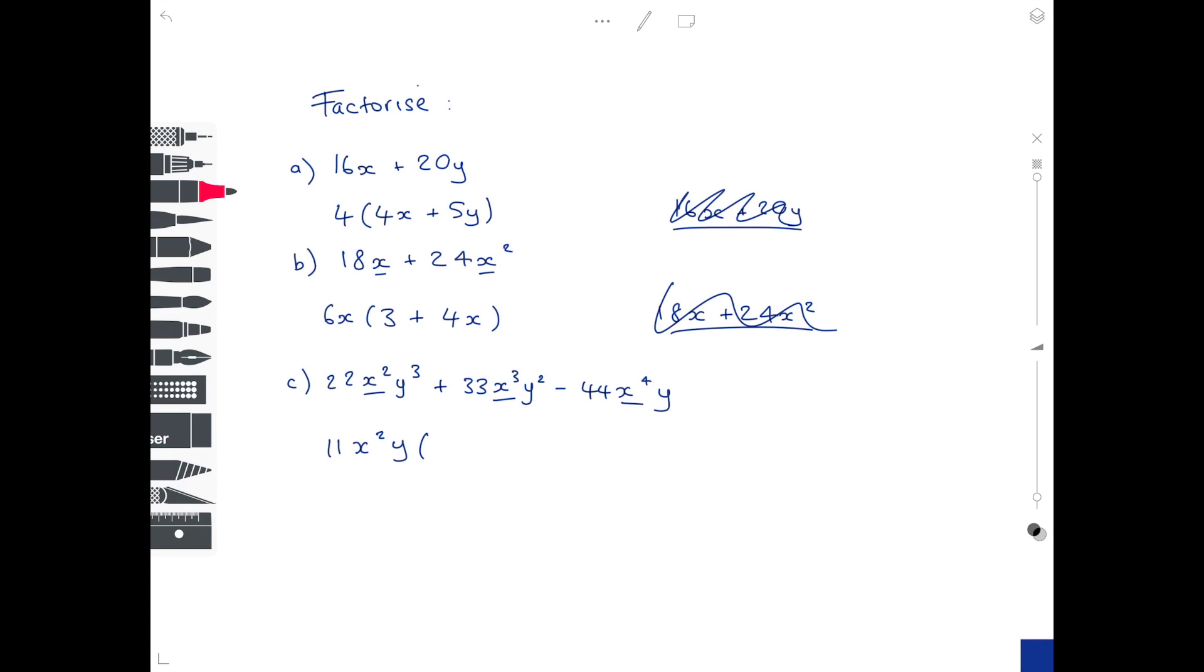Now we need to work out what to multiply 11x squared y by to reach all three terms. To get from 11x squared y to 22x squared y cubed, we simply multiply by 2 and y squared. For the second term, 33x cubed y squared, to get from 11 to 33 we multiply by 3, to get from x squared to x cubed we multiply by x, and to get from y to y squared we multiply by y.